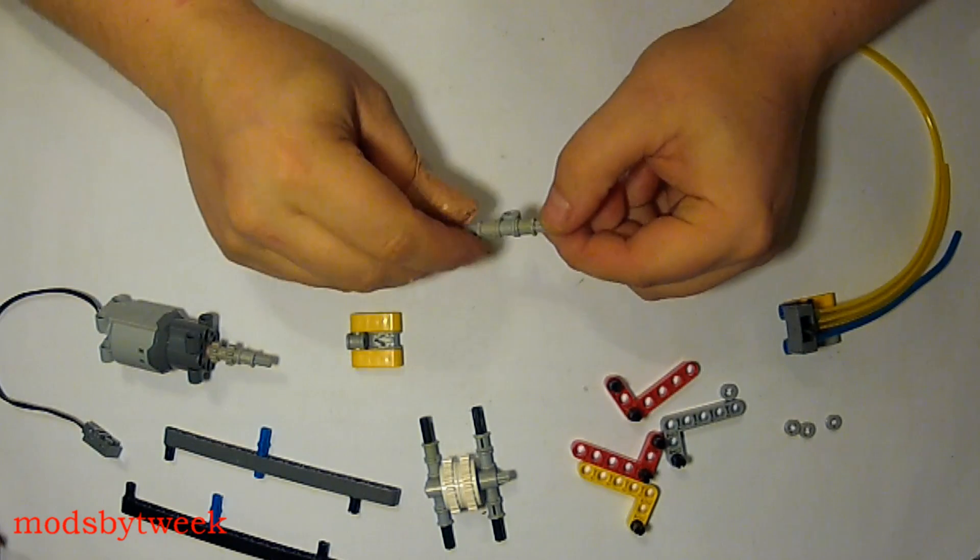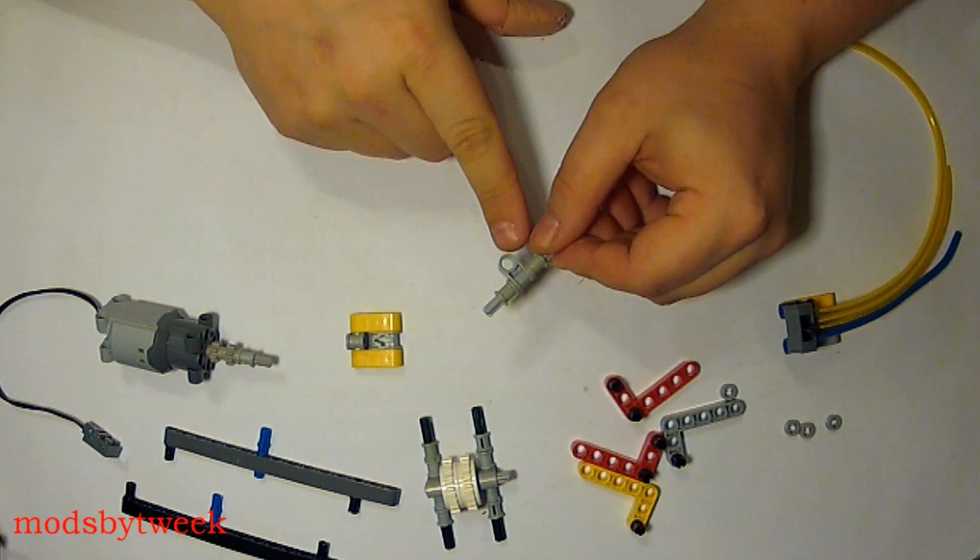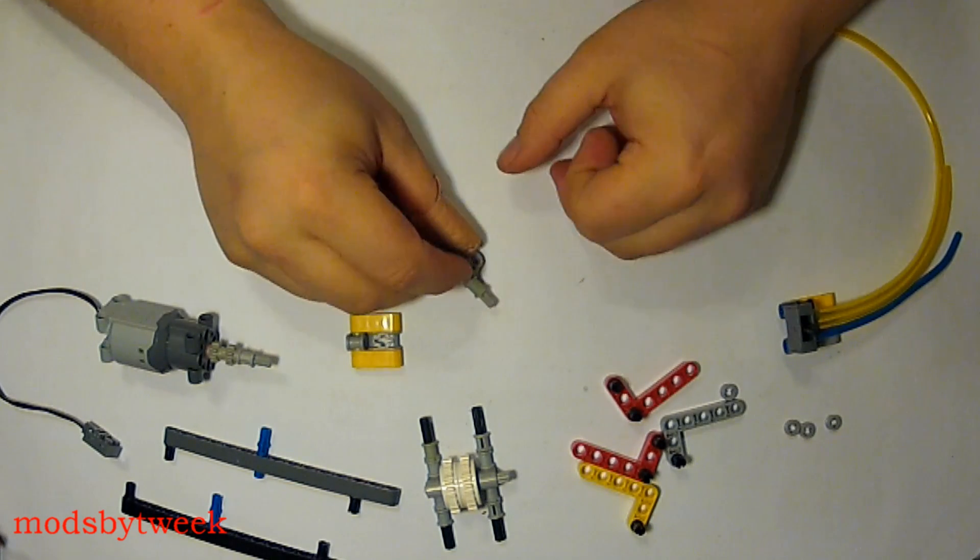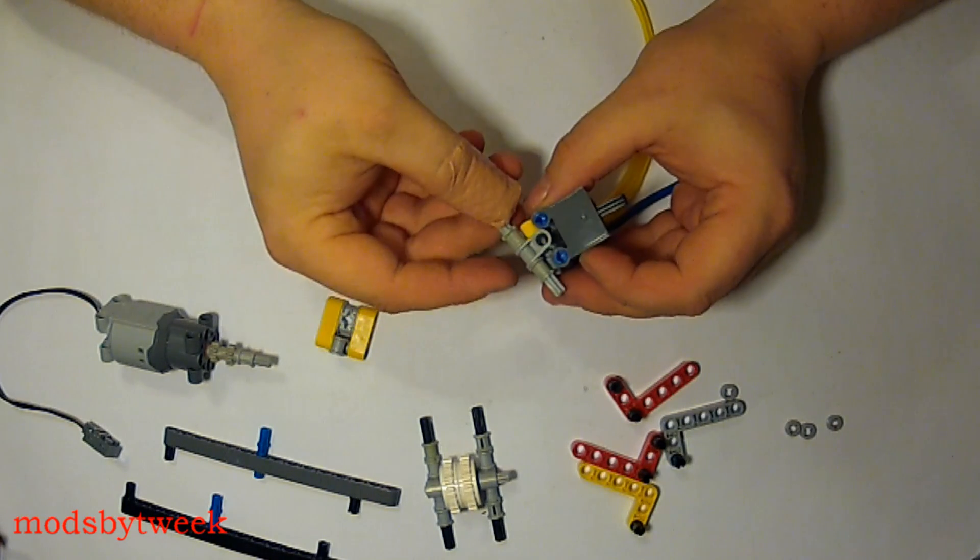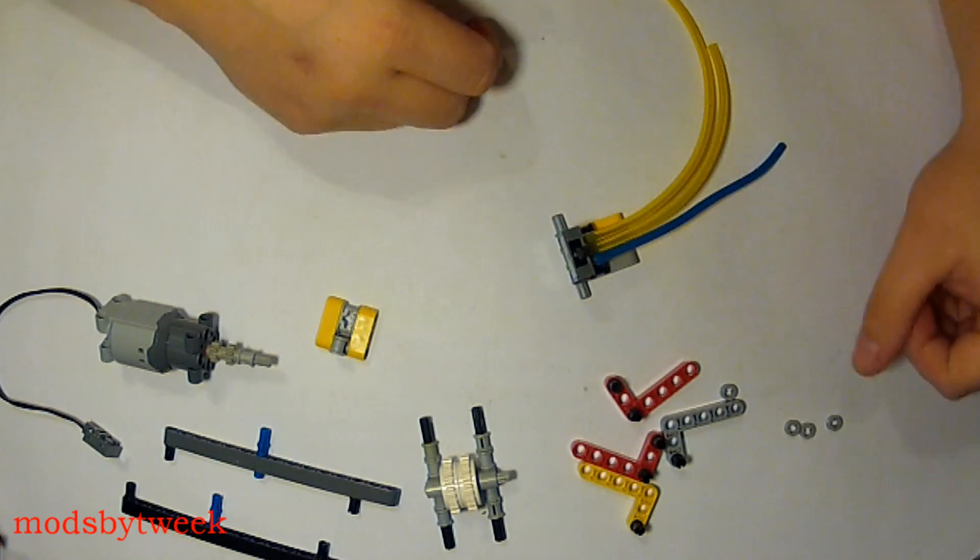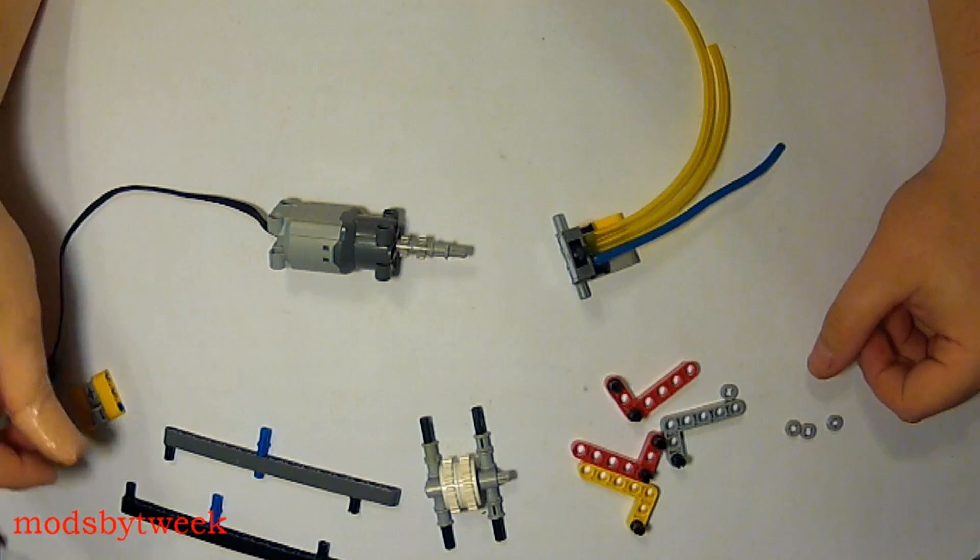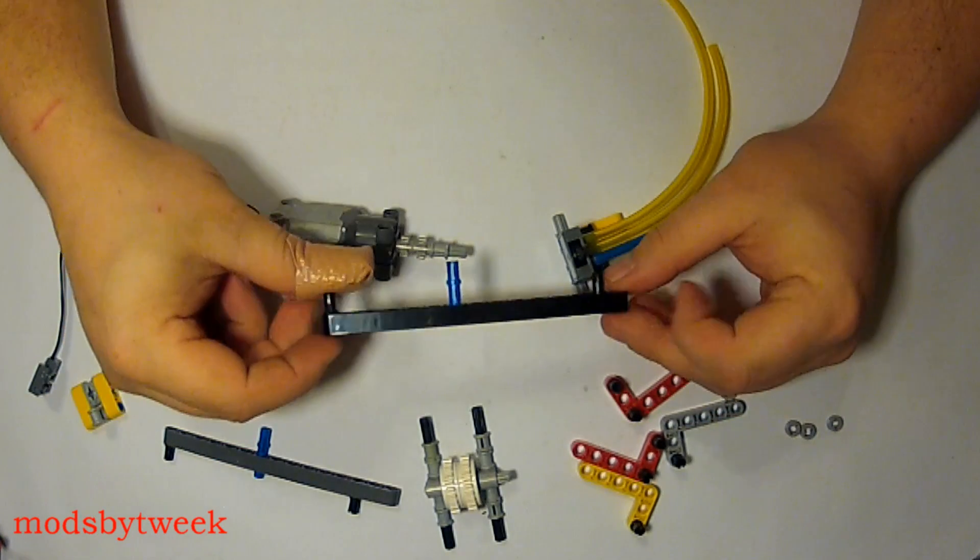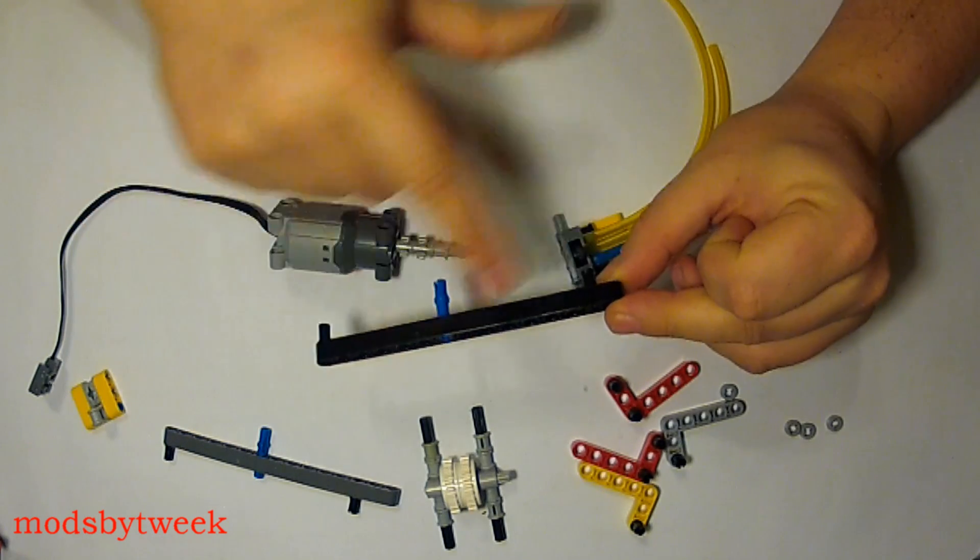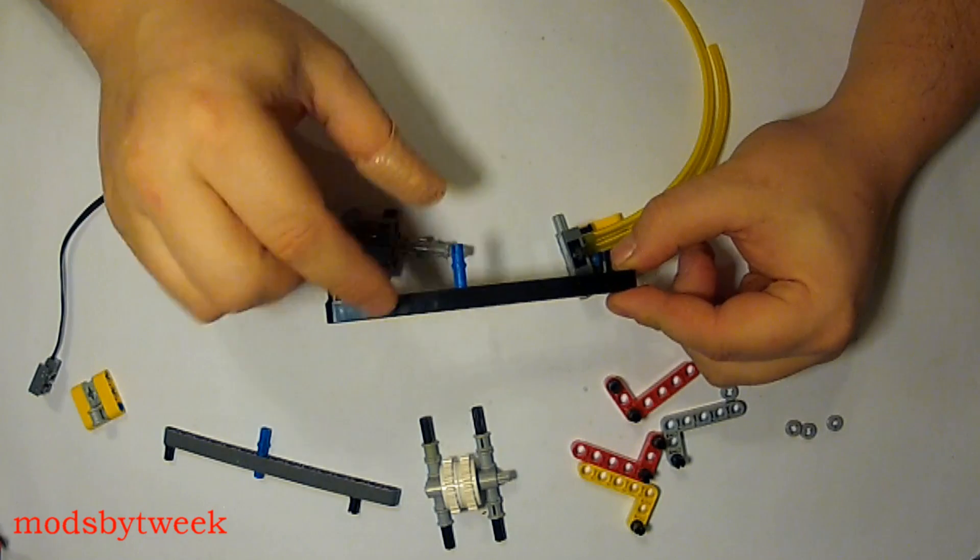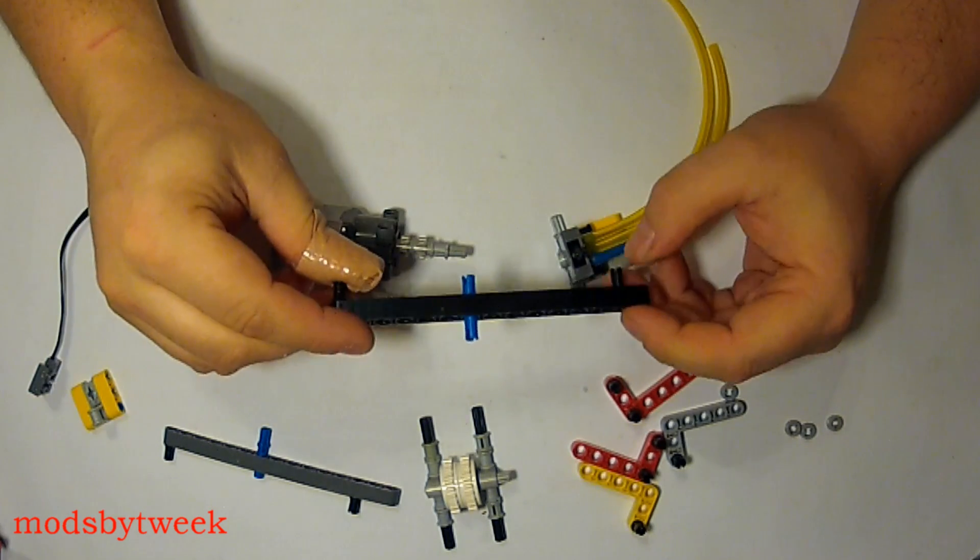Now you want to take another axle and you want to put a little two stud length with a perpendicular. And this piece is going to go up underneath here. Now we're going to take the motor and the piece we've got. You want something that's going to be rigid through here, but this could be built into your design for any of your creations.